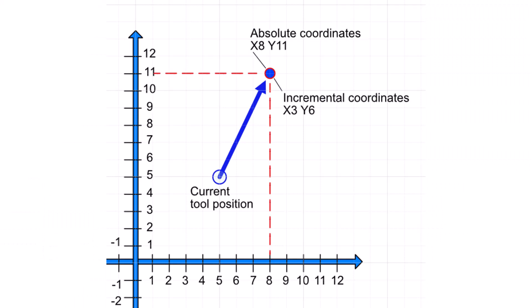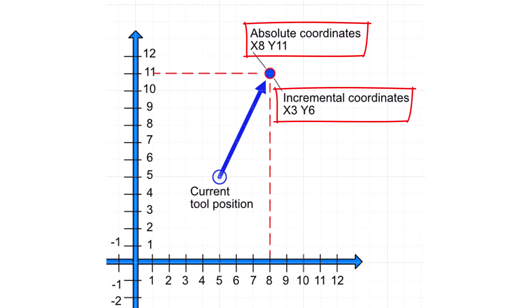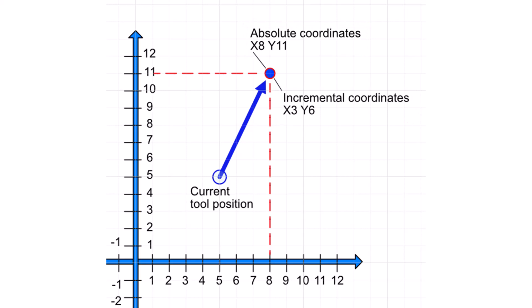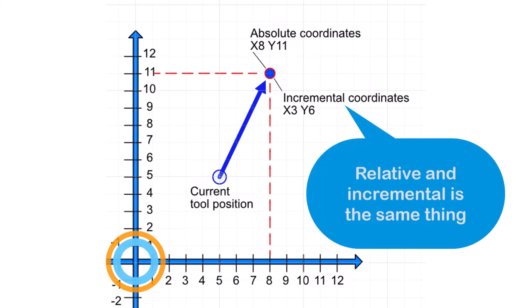When we instruct the machine to move, we can use either absolute or relative coordinates. Absolute coordinates are based on the machine's zero point. Relative coordinates, on the other hand, are based on the current position of the tool.